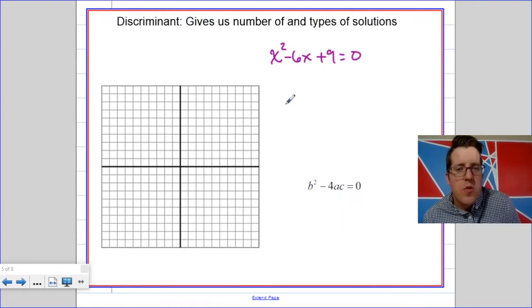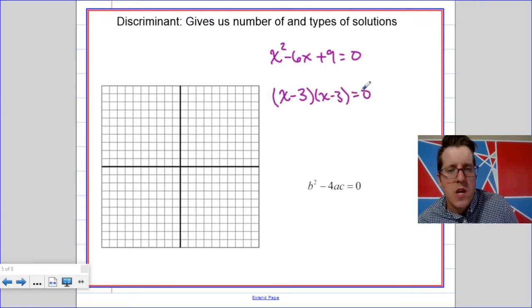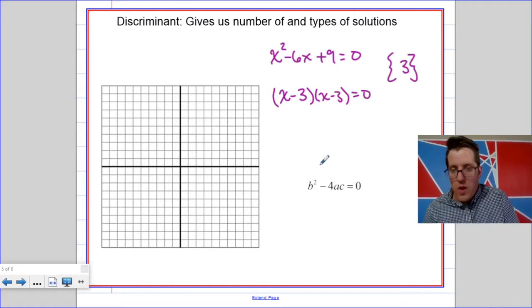Finally, something like x squared minus 6x plus 9 equals 0 is going to have a discriminant of 0. So, before we look at using the quadratic formula on that, let's think about factoring it. Wouldn't it factor to x minus 3 times x minus 3 equals 0? So, don't we kind of know just by looking at it that it only has one solution, and that solution is 3? You don't actually need to list it twice, by the way.